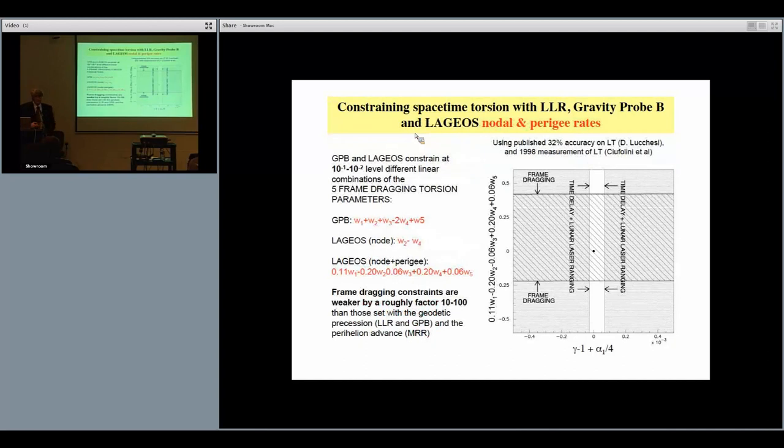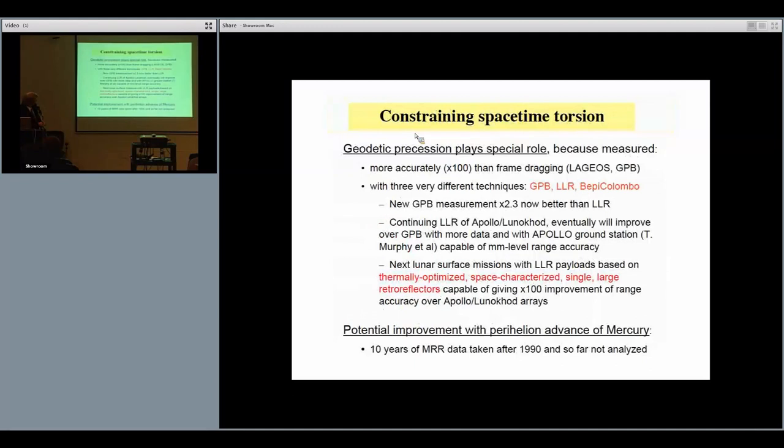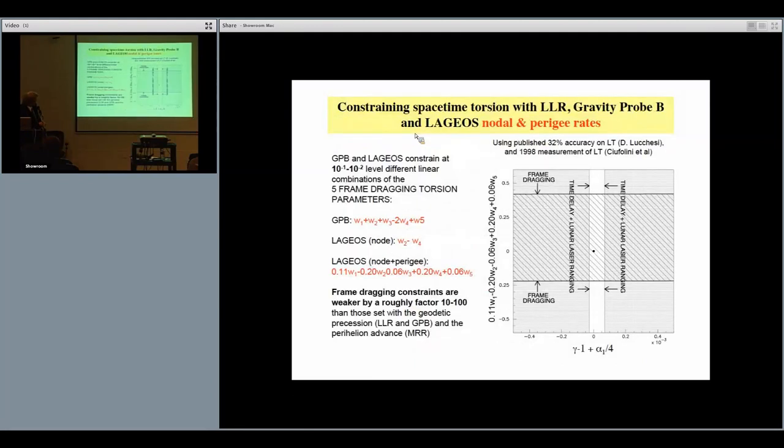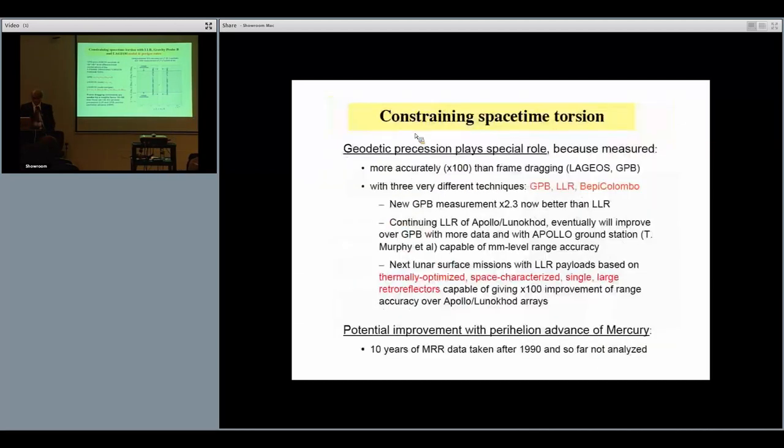You can also do that using different orbit elements of LAGEOS. You can use the node or you can use the perigee. If you use both node and perigee, you get another limit which is on this linear combination of parameters. So in this plane you constrain this linear combination. In total, with frame dragging experiments—Gravity Probe B and LAGEOS—you can constrain w2 minus w4, this combination, at the level of 10 to the minus 1, 10 to the minus 2, which is a factor roughly in a range between 10 and 100 worse than what you can do with the Moon and Mercury.